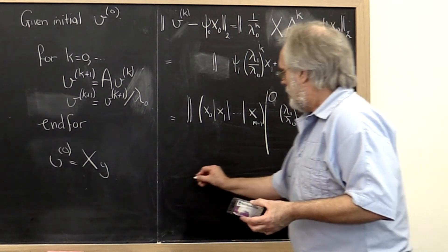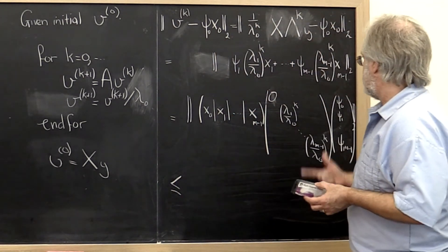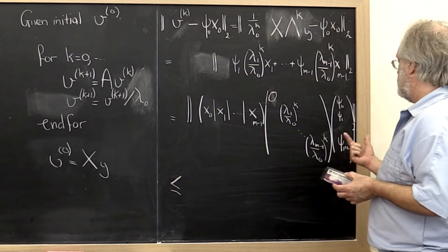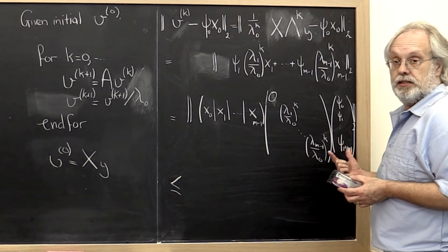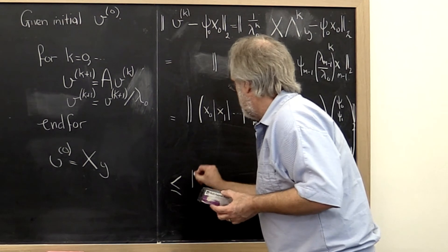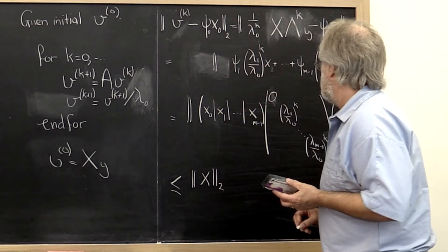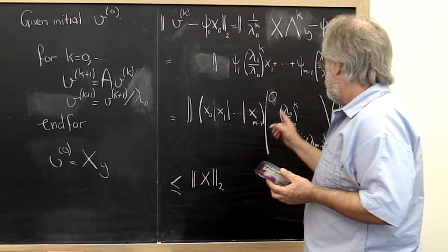And notice that we can then bound that by the 2-norm of this matrix times the 2-norm of this matrix times the 2-norm of that vector. And what does that mean?